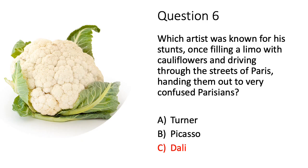Finally in this first round, which artist was known for his stunts? It was Dali again. Once he filled a limo — and I think he did it with a Rolls Royce as well — filled it full of cauliflowers and drove through the streets of Paris, handing them out to some very confused people in the street.